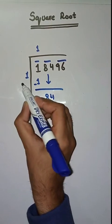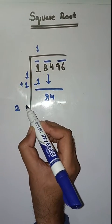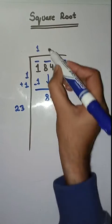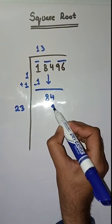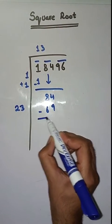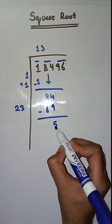We bring it down here. 1 plus 1 which is equal to 2. So we will take a number 3. 23 times 3 is 69. Minus that, we get 14 minus 9 is equal to 5, 7 minus 6 is equal to 1.